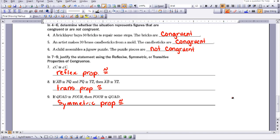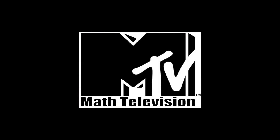And then the last one is the symmetric property of congruence. If the quadrilateral is congruent to 4, or if quad is congruent to 4, then 4 would need to be congruent to quad. Thank you.